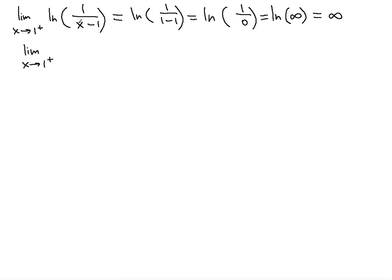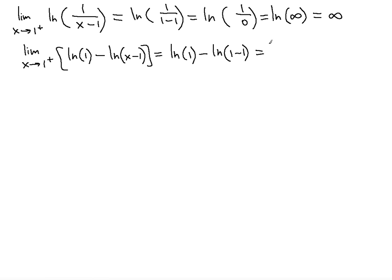Another way is to rewrite the ln using properties of logarithms: ln of a fraction equals ln of the numerator minus ln of the denominator. Inputting 1 again gives ln(1) minus ln(1 minus 1), which is 0 minus ln(0). Since ln(0) is negative infinity, the negative sign gives negative times negative infinity, which is positive infinity — the same answer as before.